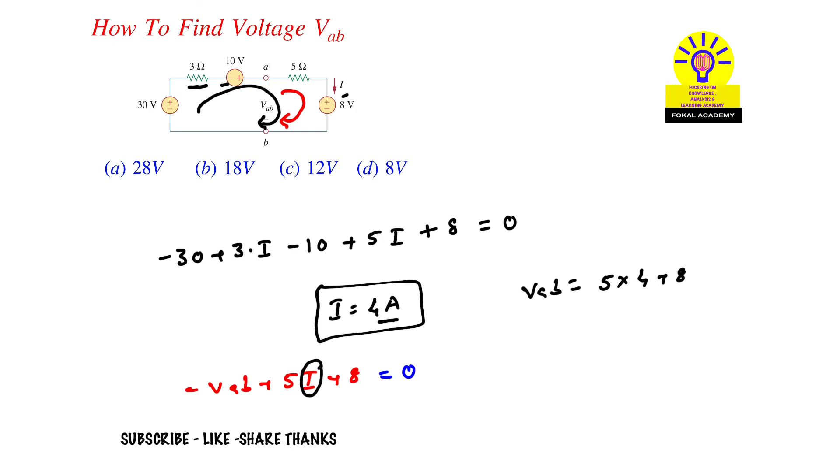Nothing but 28 volts. So the voltage across A and B node is 28 volts. And this is the process of simplification. Thanks for watching, please subscribe, like, share. Thanks.